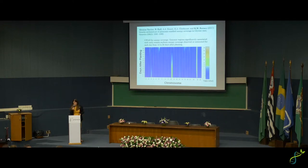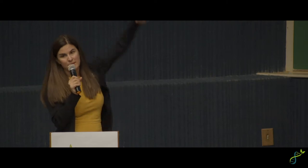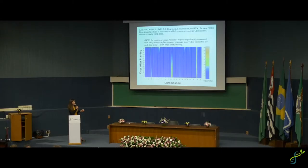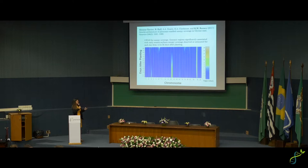Elaine Carr took that information and generated GWAS over time. This is represented as multiple Manhattan plots stacked up over development — a heat map showing significance or p-values of SNPs over time. It was interesting to see different regions of the genome controlling the trait at different points in development, which is one approach to understanding genetics and development.